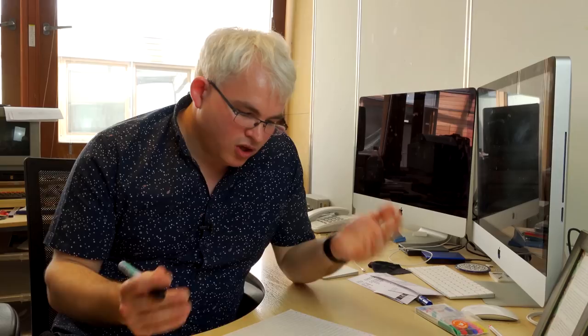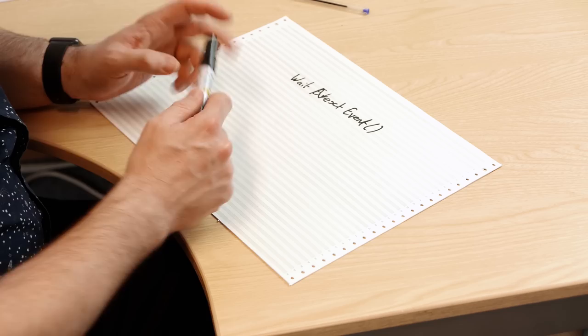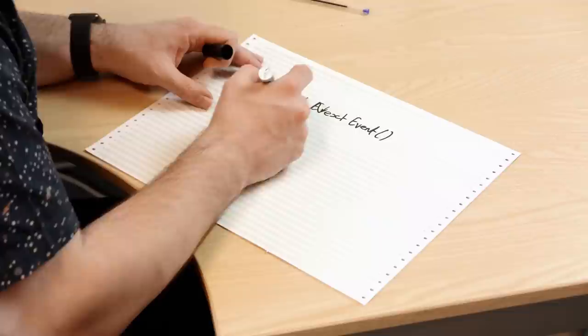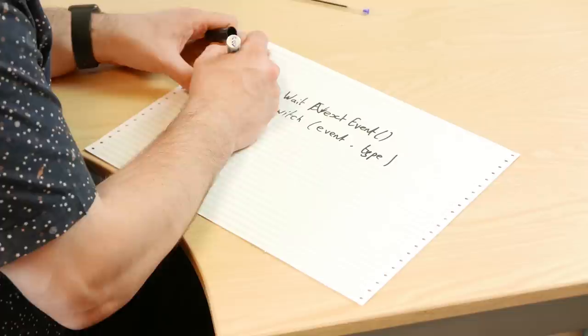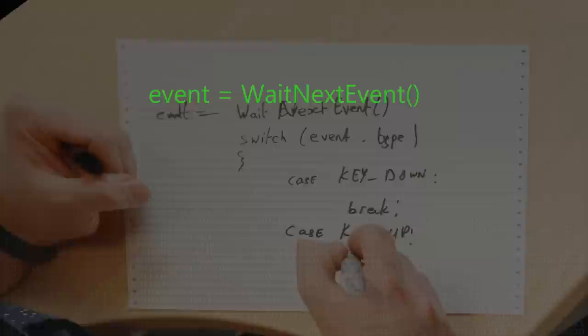Our program sits there waiting for the next event. This will often return some sort of structure with the data in it, and then you'll have a big switch statement or a series of if statements to switch on the event type. In pseudo-code, we switch on the type: if it's a key down event we do one thing, if it's a key up event we do another, and so on. These aren't the only events you get - the UI toolkit creates lots of other events.